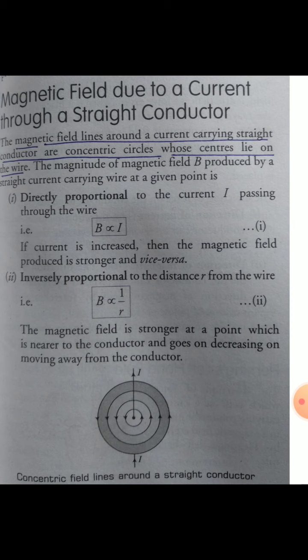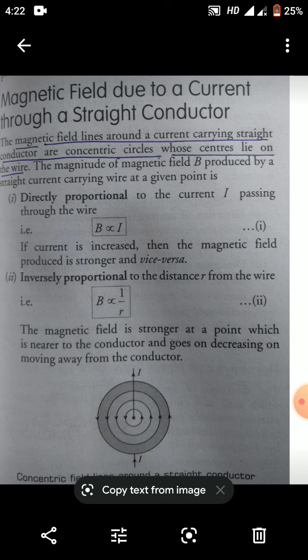Second, the magnitude of magnetic field B also depends on small r — the distance from the wire. B is inversely proportional to r: as you move farther away, the magnetic field decreases. The magnetic field is stronger at points nearer to the conductor and goes on decreasing as you move away from it.